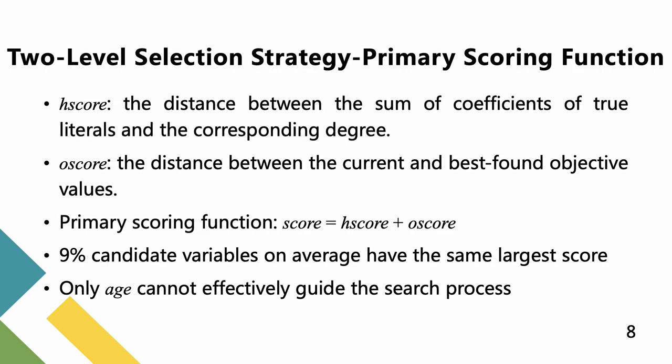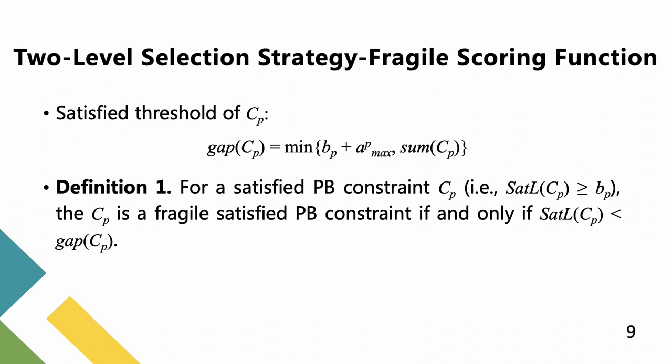In our algorithm, we consider the sum of H-score and O-score as the primary scoring function, which is the same method as LSPBO. According to our preliminary experiments, 9% of candidate variables on average have the same largest score value during the search. Previous work used age information of variables as the secondary scoring function. However, the experimental results show that the use of only age cannot effectively guide the search process.